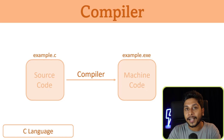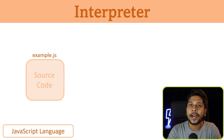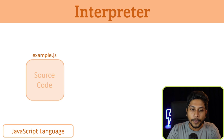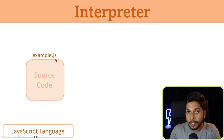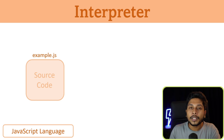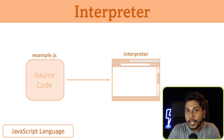This is an interpreter. This is JavaScript — a JavaScript language, an interpreter language. This is a source code. We have a file called example.js, a JavaScript file. This JavaScript file is passed to the interpreter — it is a web browser. In the web browser, you can use the JavaScript file.